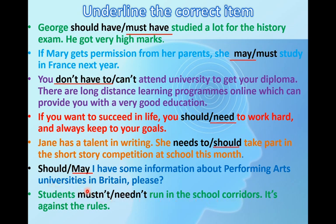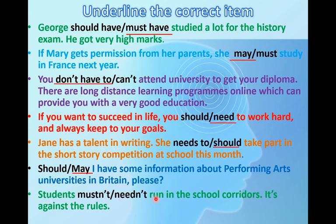Students mustn't / needn't run in the school corridors — it's against the rules. Where's the clue? The word 'rules' — правило. Rules correspond to must or mustn't. Mustn't means forbidden; needn't means there's no need. Students are forbidden from running in corridors — it's a rule. So: students mustn't run in the school corridors.